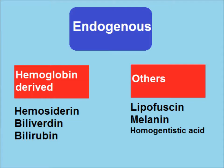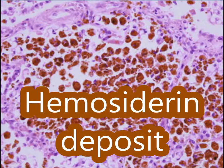Hemosiderin is the main brown-colored pigment derived from hemoglobin. Hemoglobin is a normal constituent of red blood cells. Today we will discuss hemosiderin deposition.